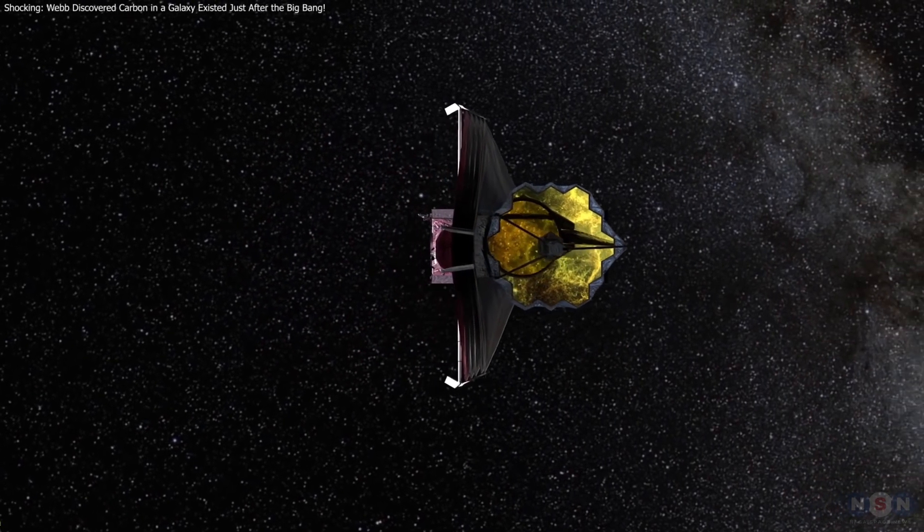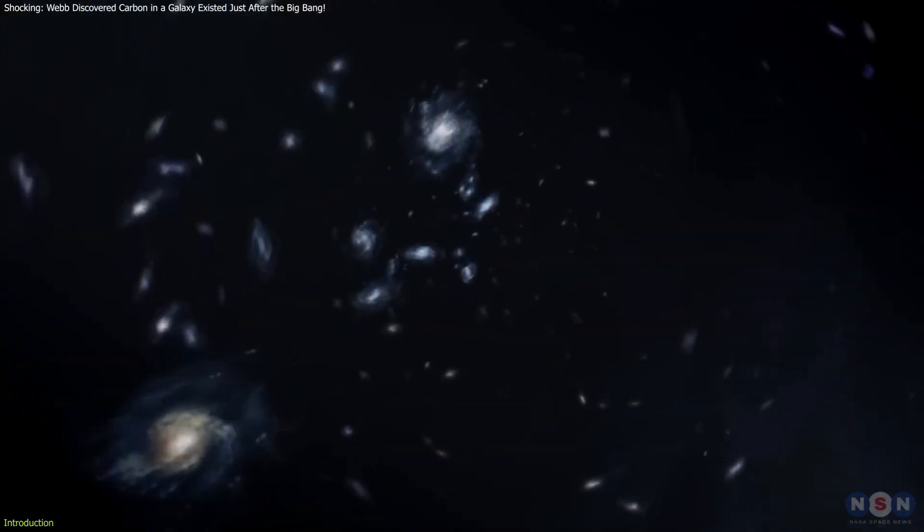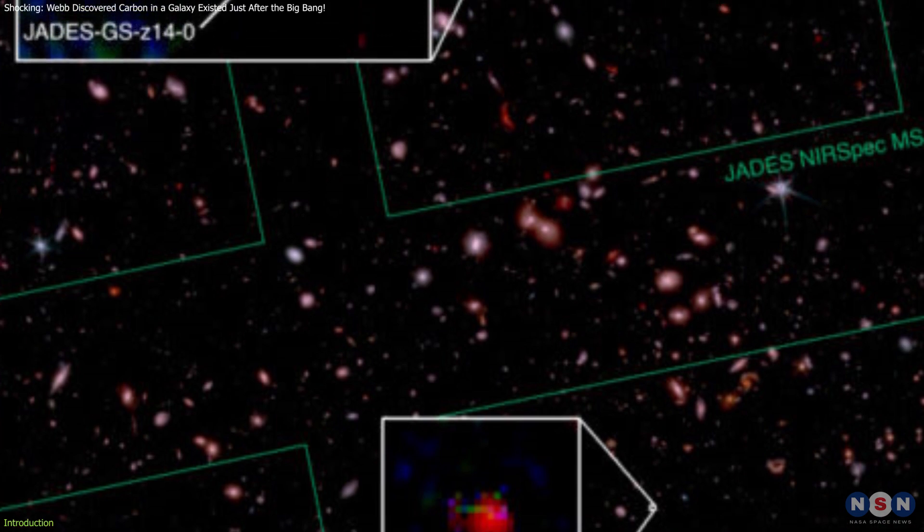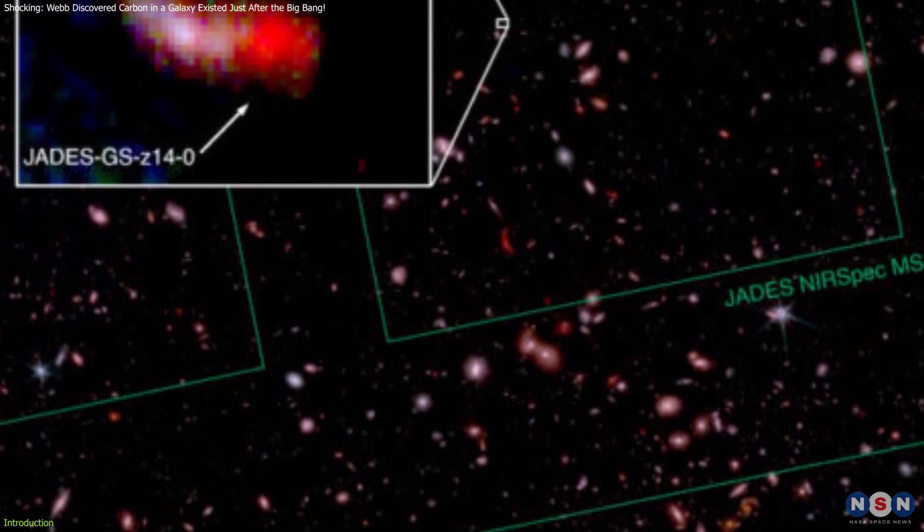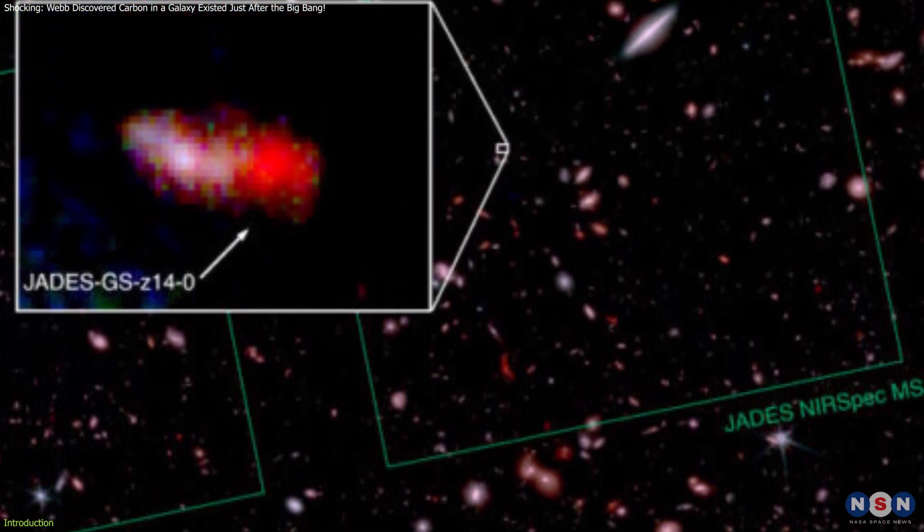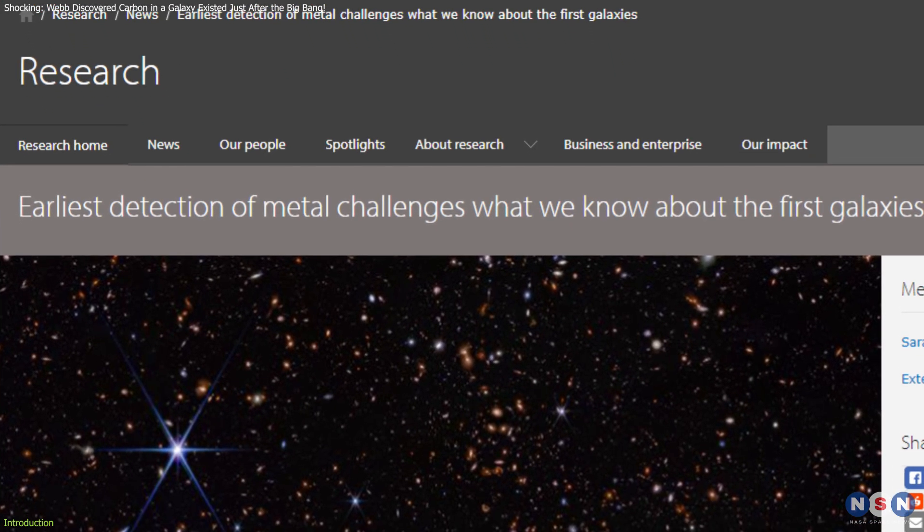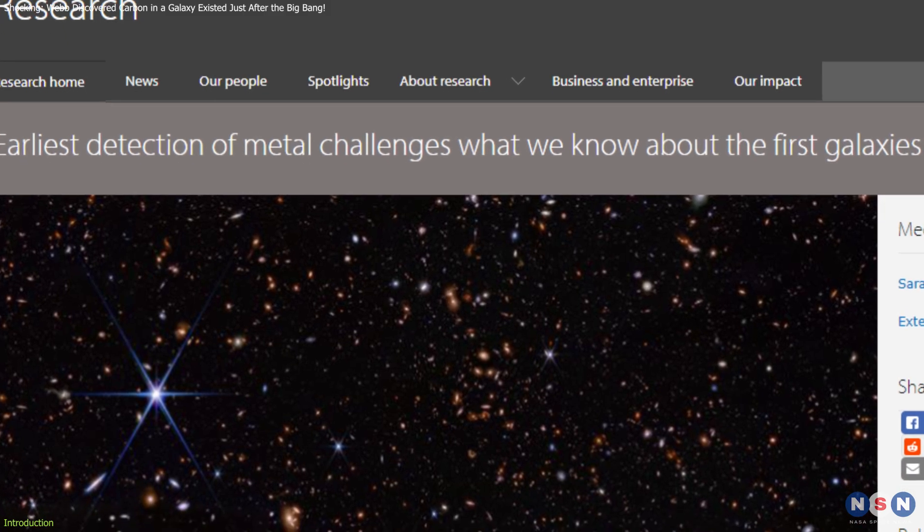The James Webb Space Telescope has once again pushed the boundaries of our understanding of the cosmos. Remember those ancient galaxies it detected that existed just 350 million years after the Big Bang? Well, recently, it made a groundbreaking discovery by detecting carbon in one of these primordial galaxies.